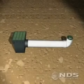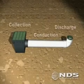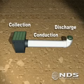A drainage system has three major phases: collection, conduction, and discharge.